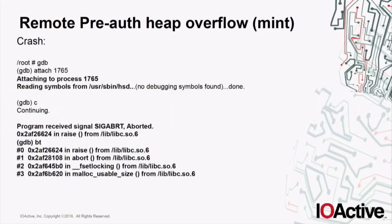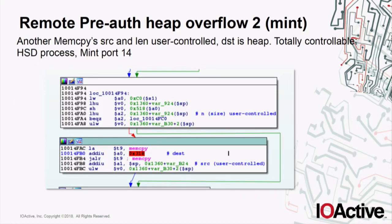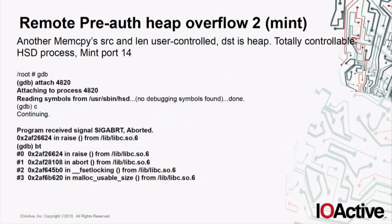Here we have the crash from this heap overflow memcpy. Since there are no modern exploit mitigations and the libc version is old in this operating system, it shouldn't be too complex to get code execution from this heap overflow. There are more heap overflows — pretty much the same in another switch-case statement, where the source is user-controlled, size is user-controlled, and the destination is a heap buffer.